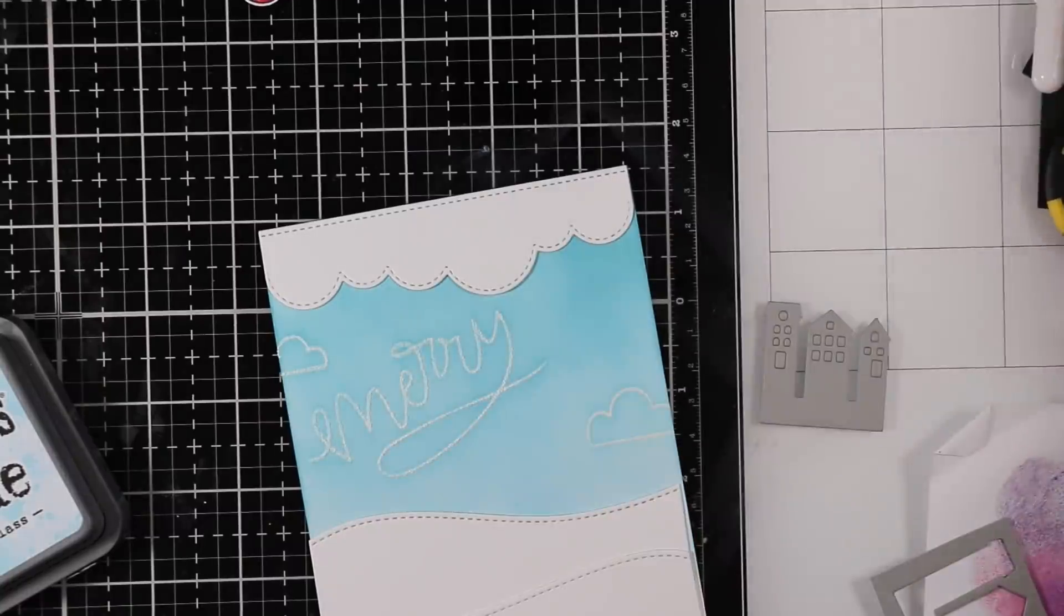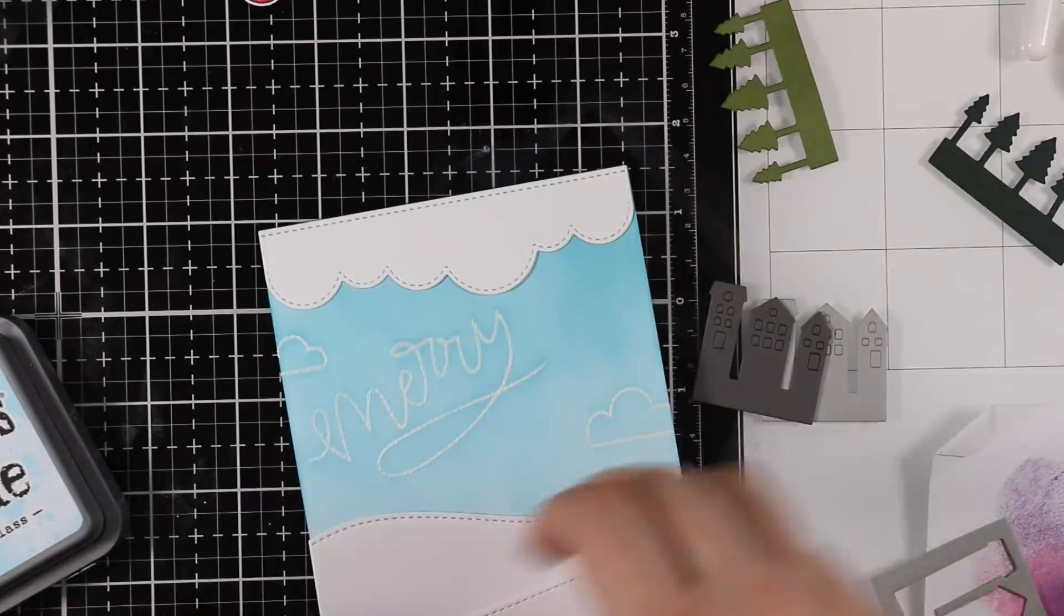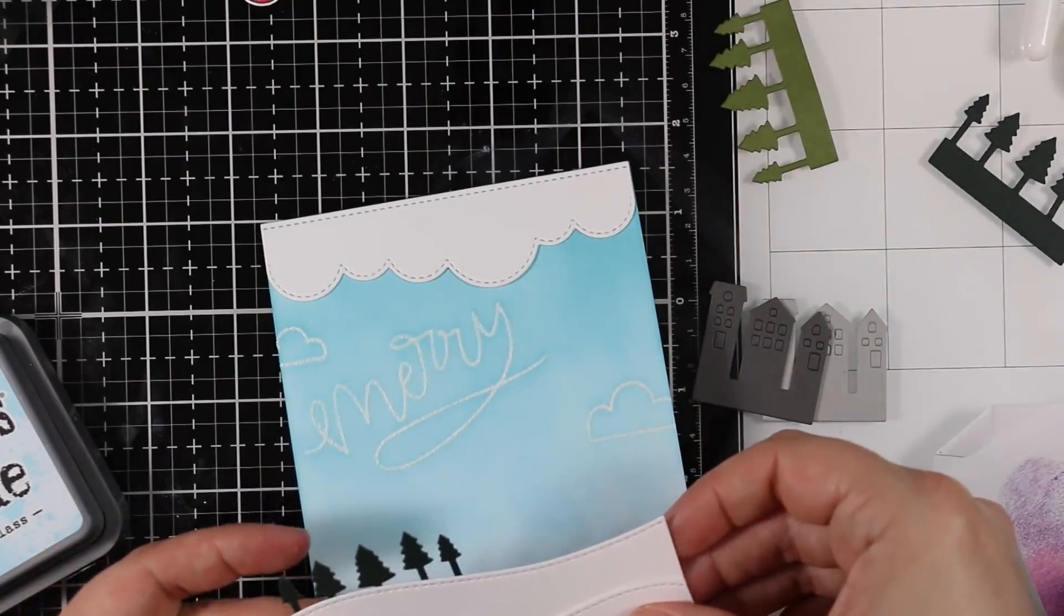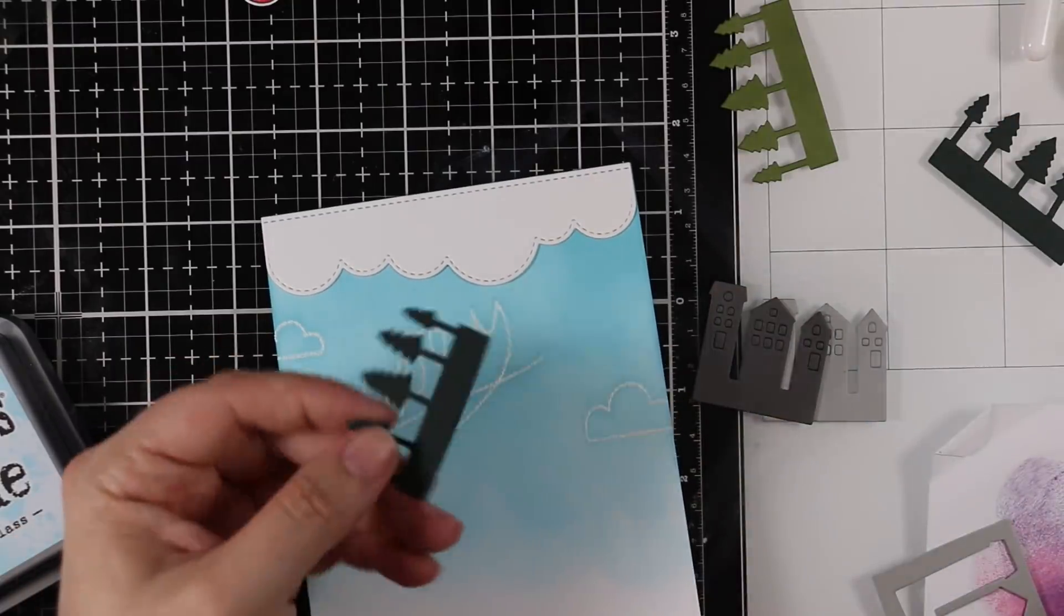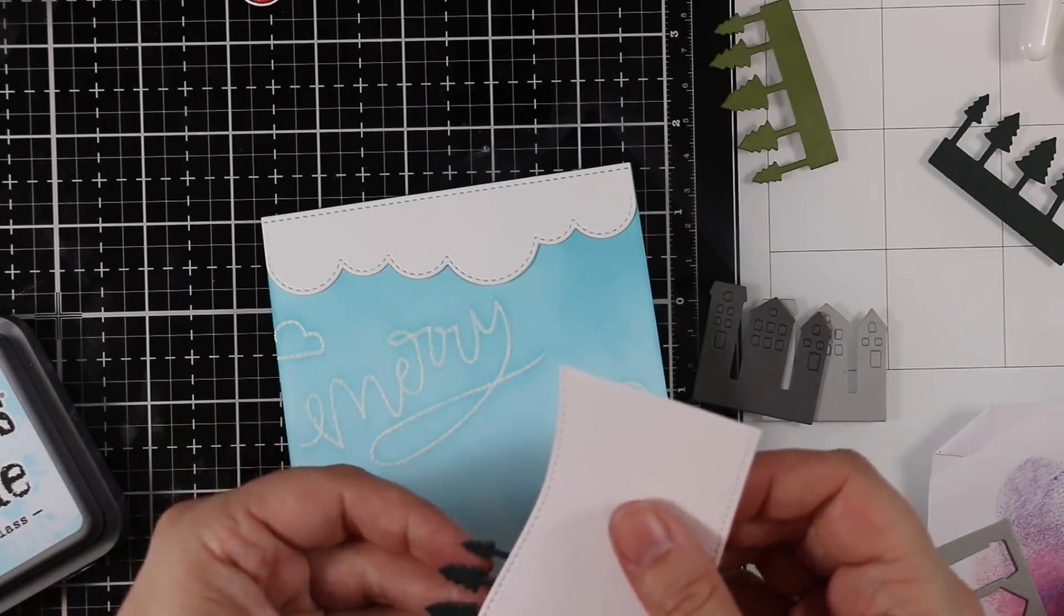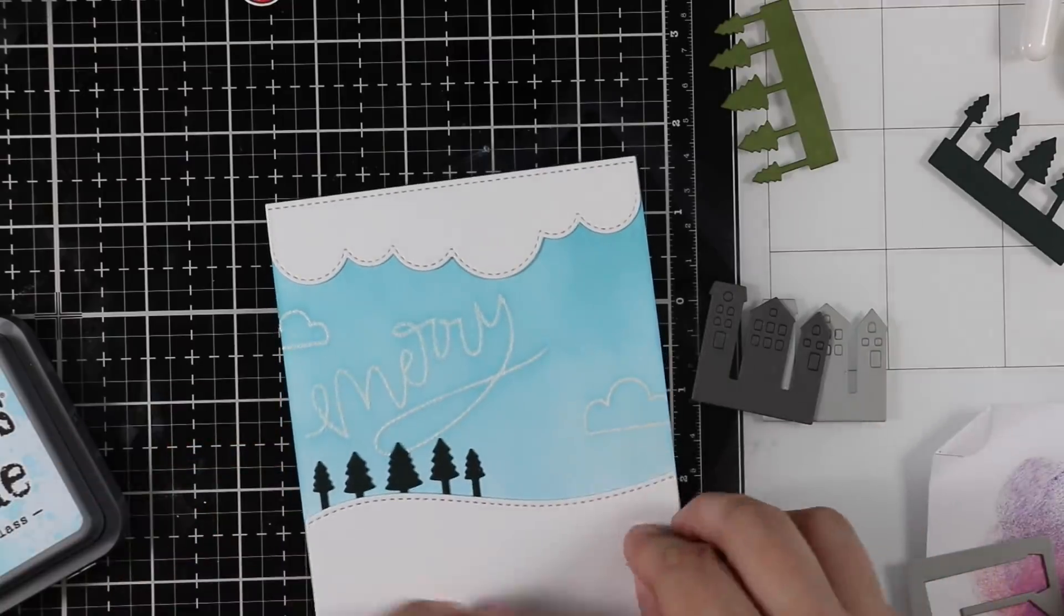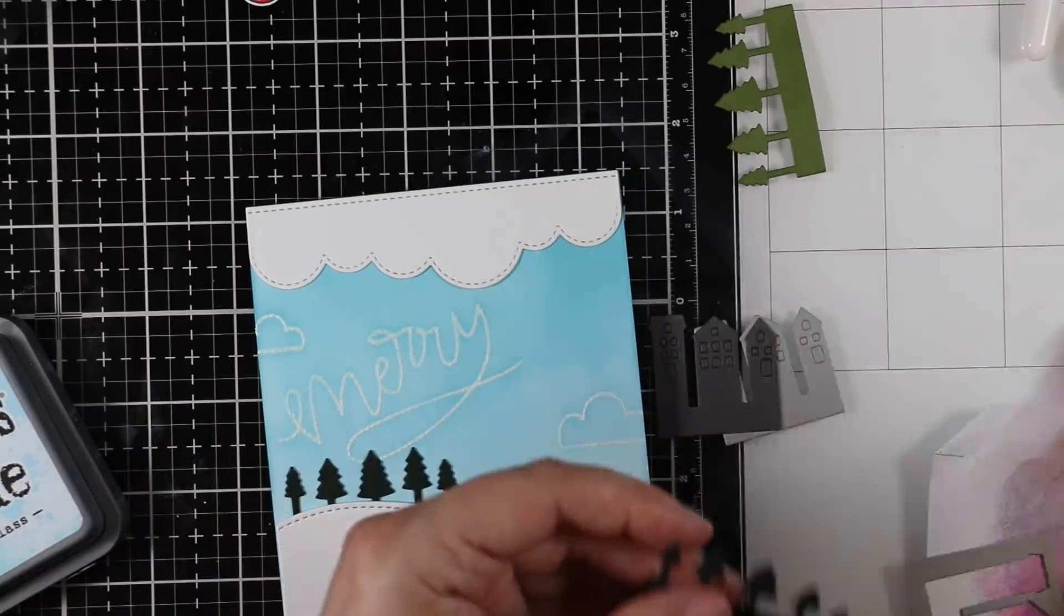After I was done, I popped the clouds into place with some Gina K Connect glue. The bottom portions were die cut from white cardstock. In that On the Hills die set are these dies to create the little trees and buildings which are just super fun, and they're all connected so it's super easy to adhere everything together.